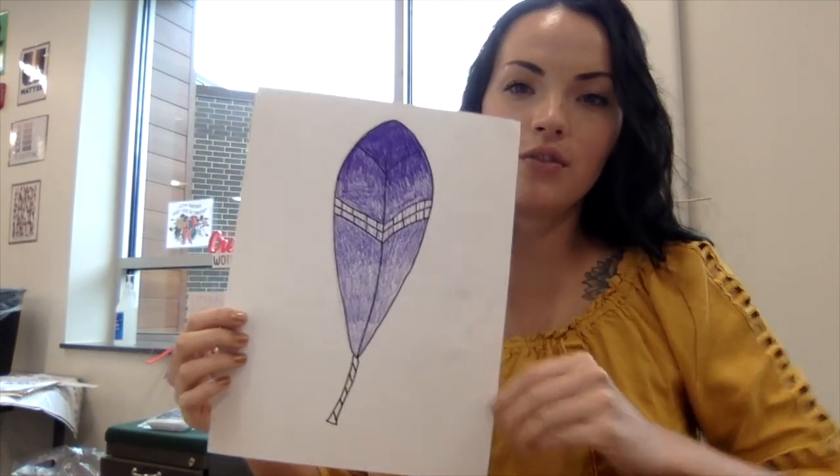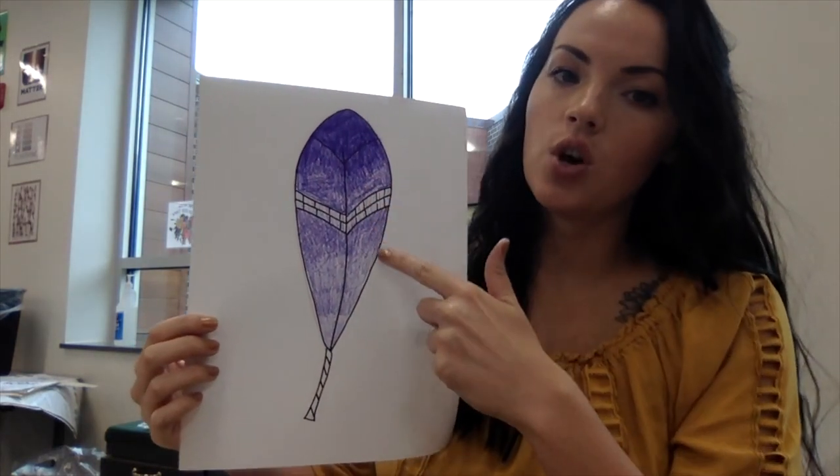All right, so one more view. Here is my finished value feather. See value? It starts dark and then it slowly gets a little bit lighter.